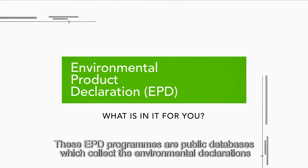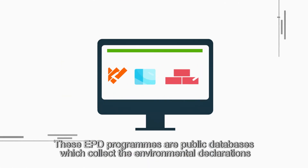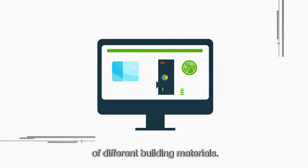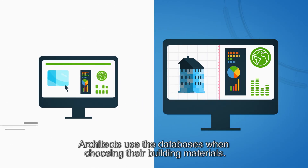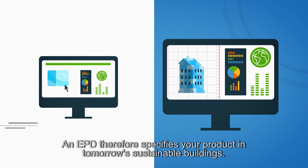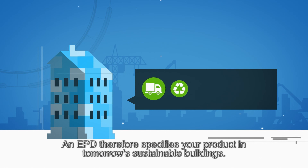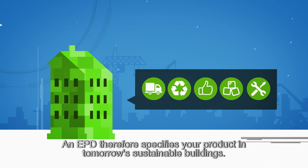You can then register the product in an EPD program. These EPD programs are public databases which collect the environmental declarations of different building materials. Architects use these databases when choosing their building materials. An EPD therefore specifies your product in tomorrow's sustainable buildings.